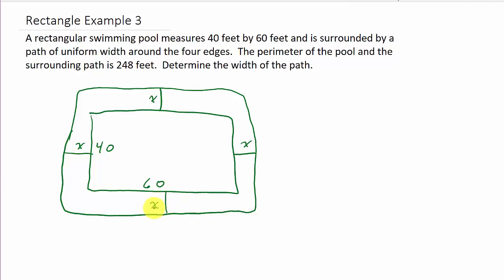They give us the perimeter of the path going around the pool. This entire distance here, if we add up all of this, will be 248 feet. So we need this distance here, which would be 2x plus 60.